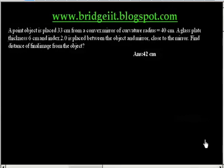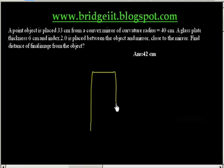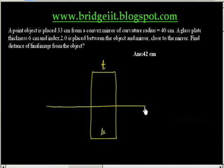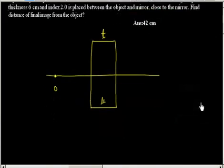Now let us discuss this problem. Before discussing this I can discuss one small theory. Let us say I have a slab, and the thickness of this slab is t. I am making this slab slightly exaggerated. And the refractive index of this slab is mu. There is an object that is kept here, at a distance x from the left end.